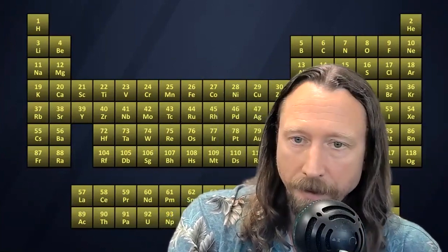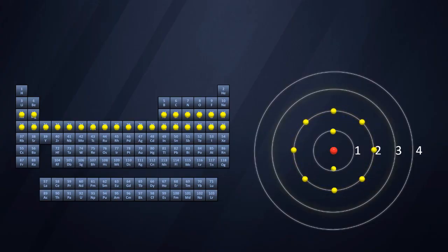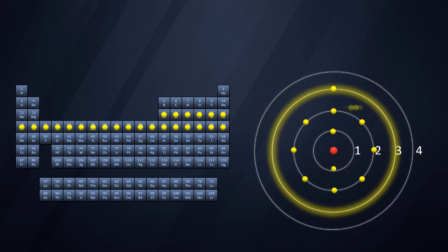However, when we get to the third and fourth energy level, something different happens. What Bury was proposing was that the third energy level would first take on 8 electrons, corresponding to what we now know as the third period of the table, before moving on to filling the fourth energy level.